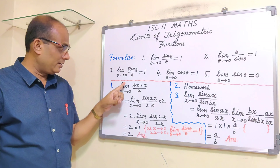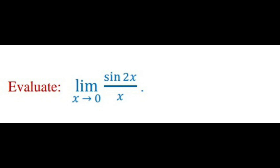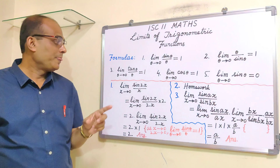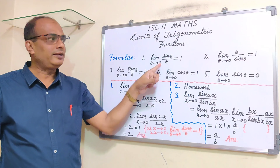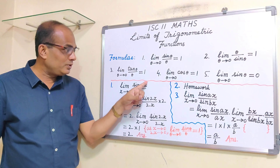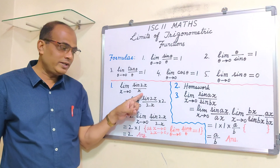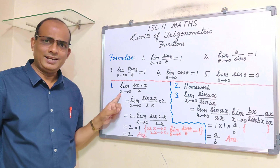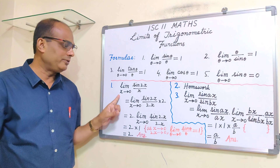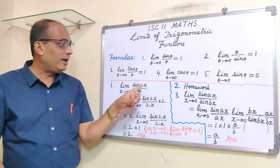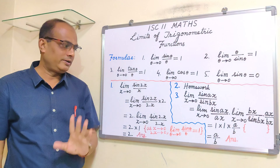Note that theta can be replaced by x, 2x, alpha, or any variable. The first question is: limit x→0 of sin(2x)/x. We will use the formula limit theta→0 of sin(theta)/theta = 1. Here theta corresponds to 2x, so both the sine argument and the denominator should be 2x.